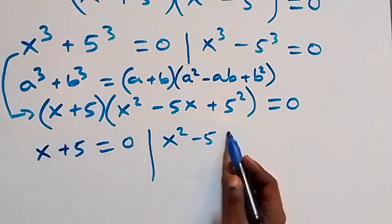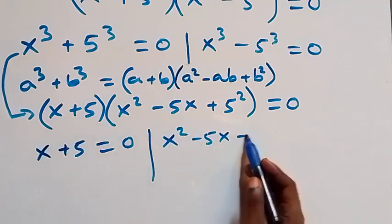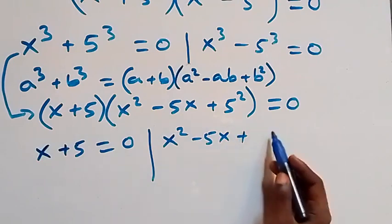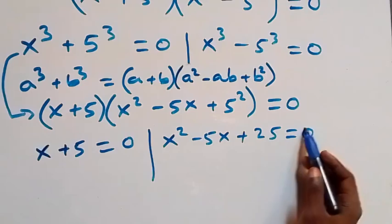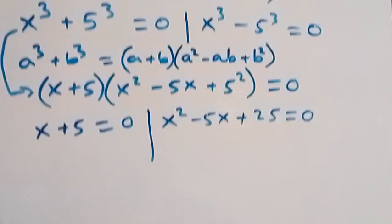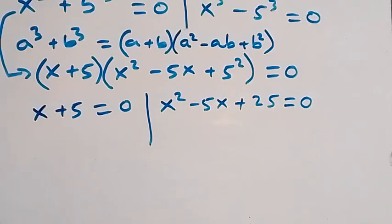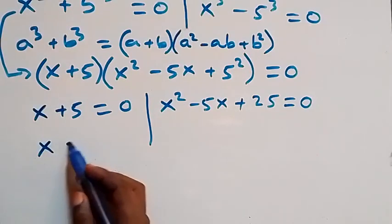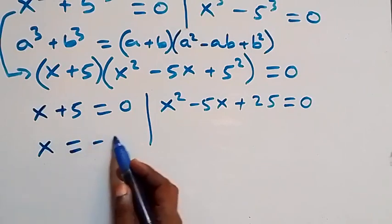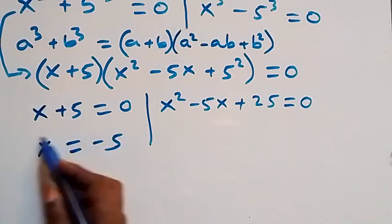Applying the sum of cubes to x cubed plus 5 cubed, we get x plus 5, times open bracket x squared minus 5x plus 5 squared, which is 25, close bracket equals zero. From here, on one side we have x equals minus 5.